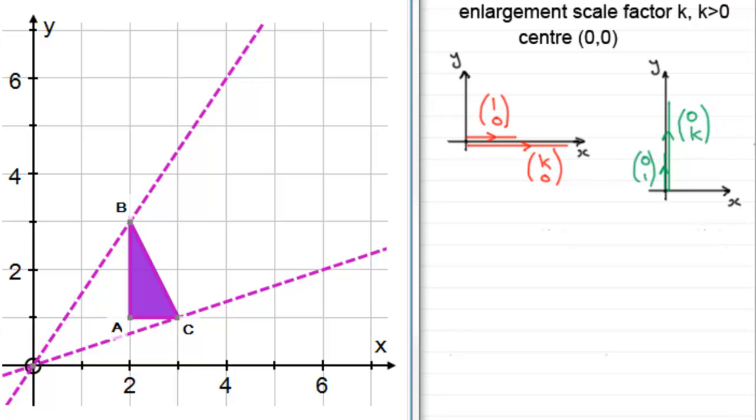So when it comes to the transformation matrix that we need to compile, all we do is we just look at where each of these unit base vectors has gone to. So (1,0) has gone to (k,0), so we write that down first: k, 0. And then we take this unit base vector (0,1), which has now gone to (0,k).